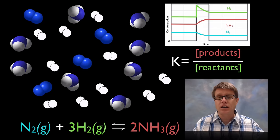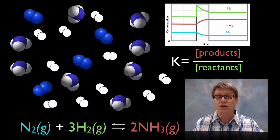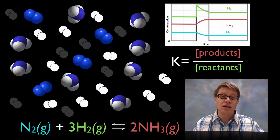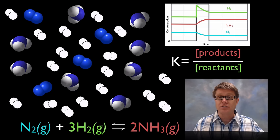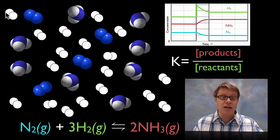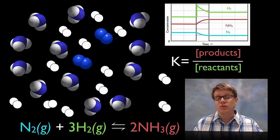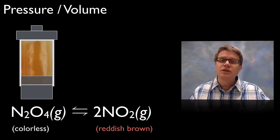Looking at this at the molecular level — all of our gases are mixed together in varying amounts. If we get an increase in the amount of hydrogen gas, how can we get rid of it? We can simply combine it with nitrogen, make more ammonia, and then reestablish that new equilibrium again.